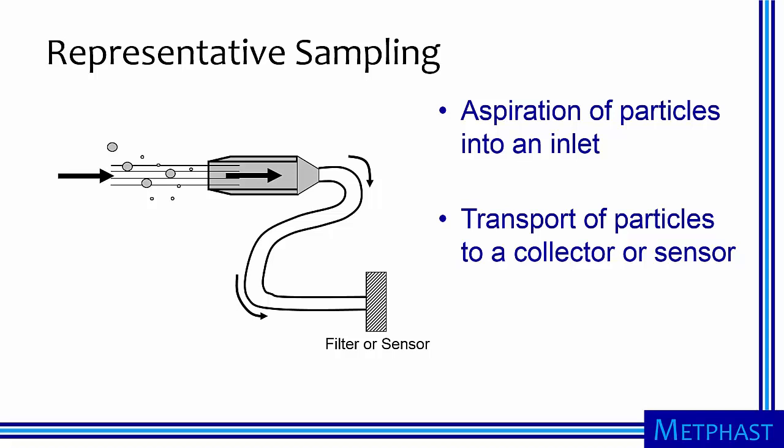Sampling the environment representatively is another major concern when sampling for particles. Sampling consists of aspirating particles into an inlet and transporting them to a filter or other type of collection device or sensor for detection.